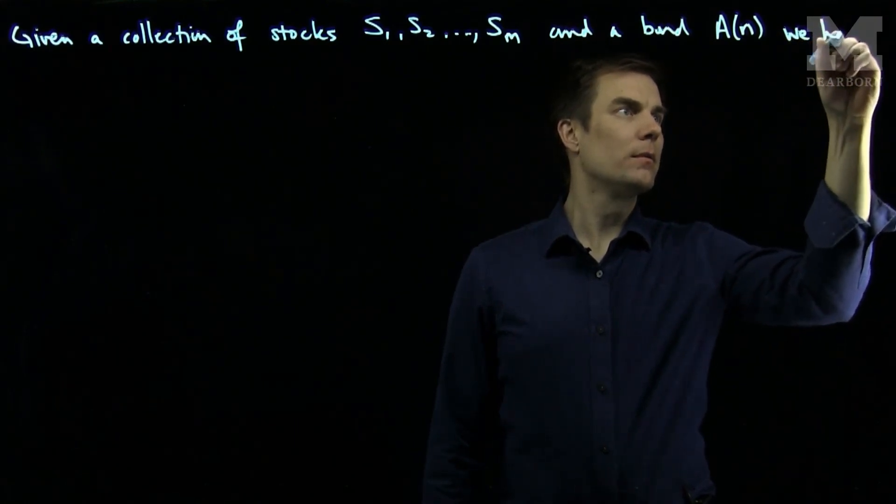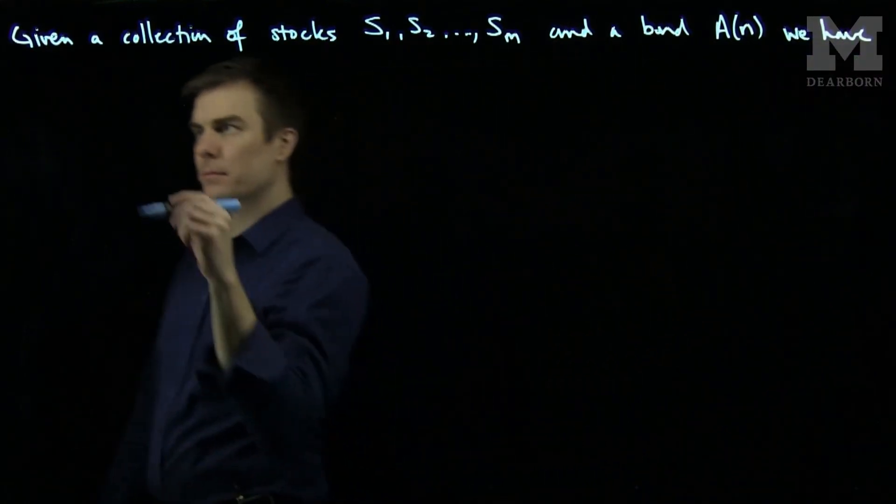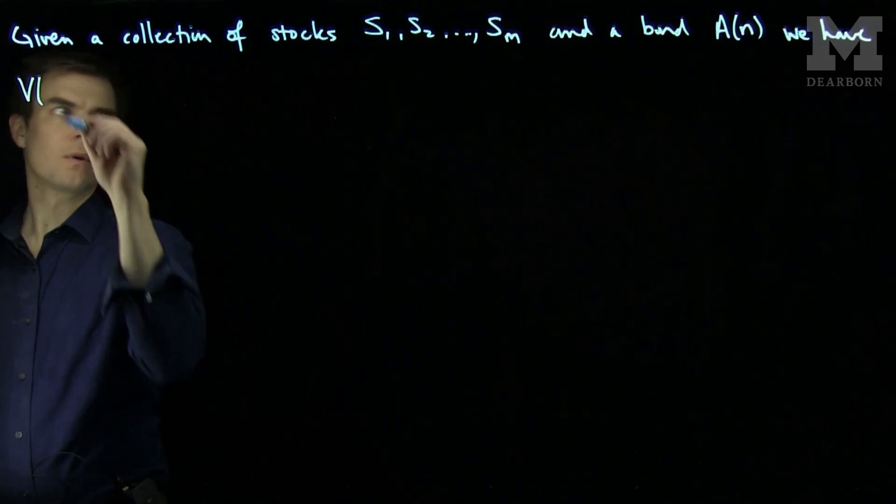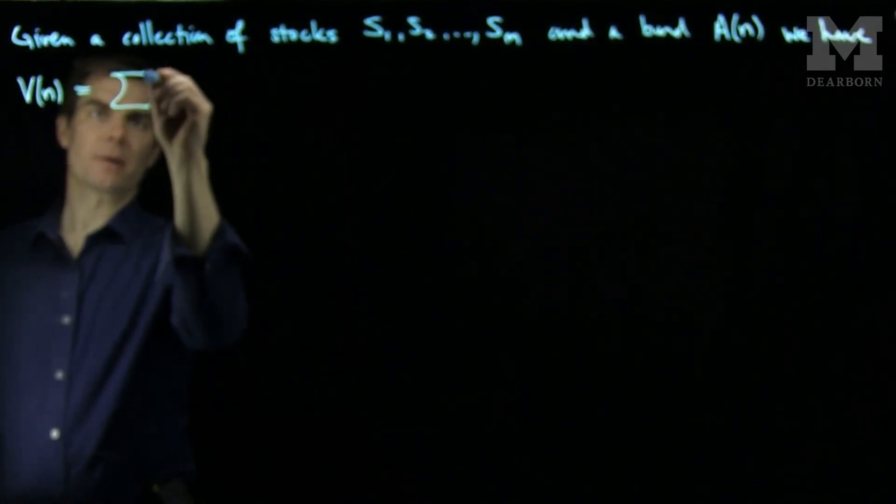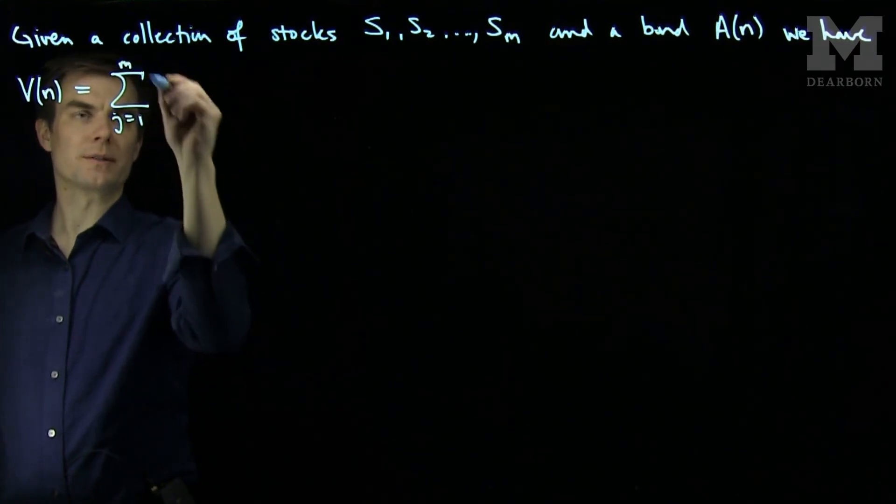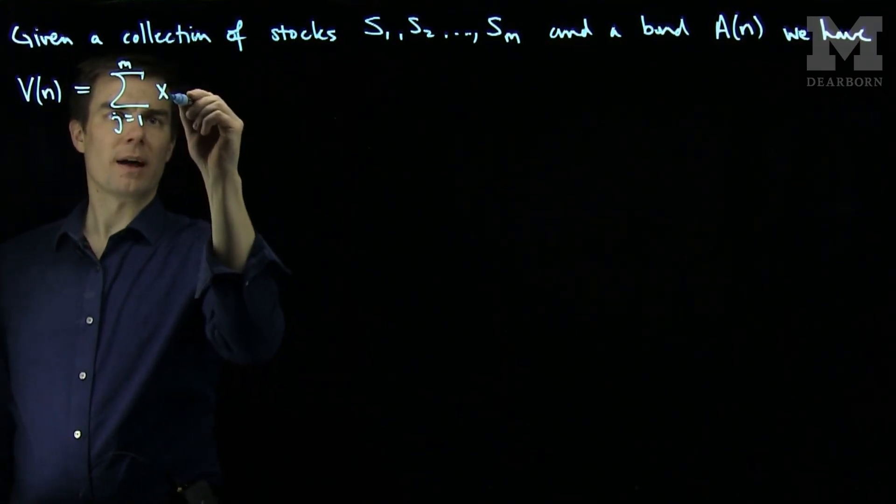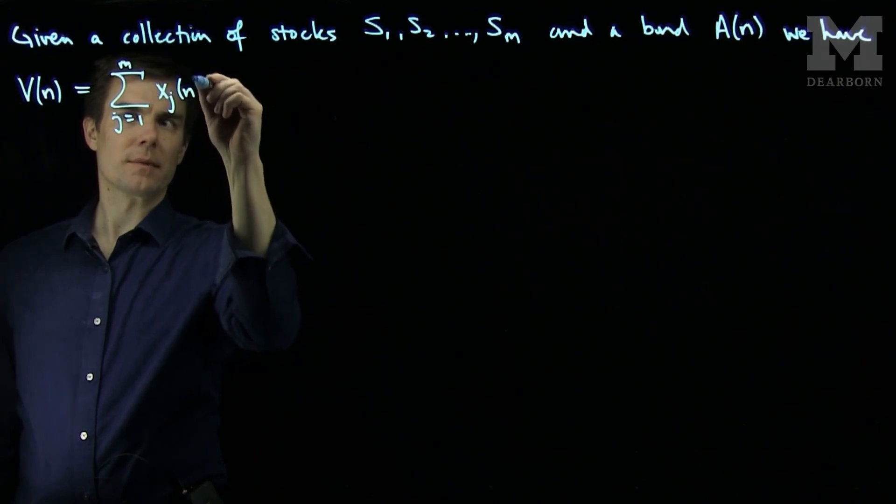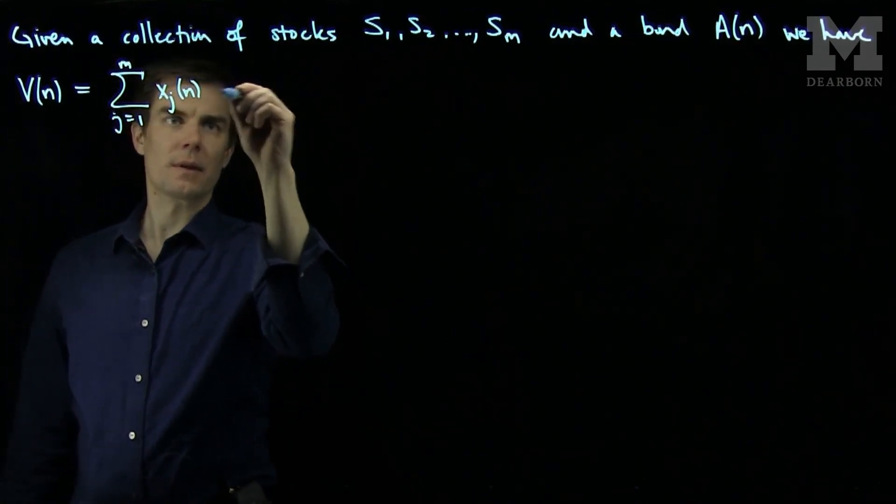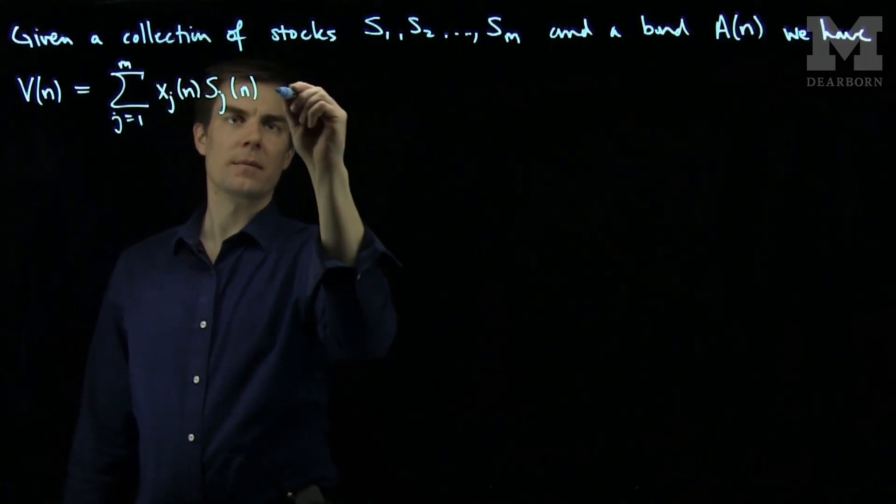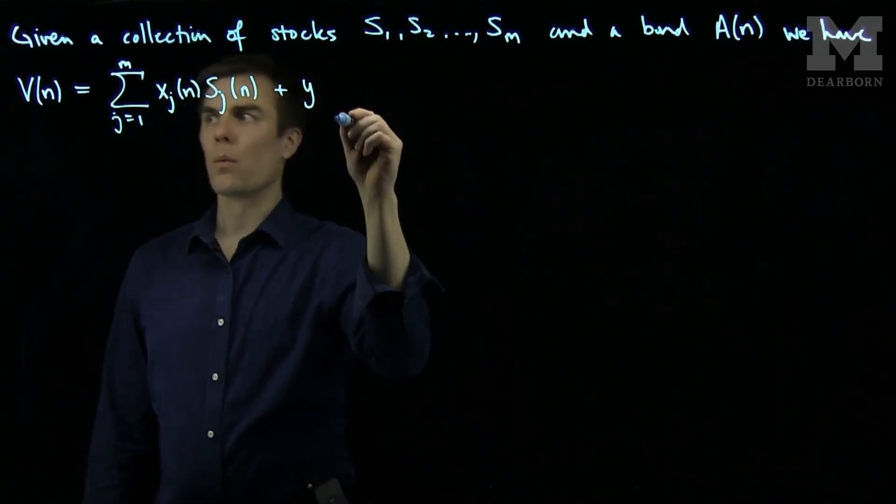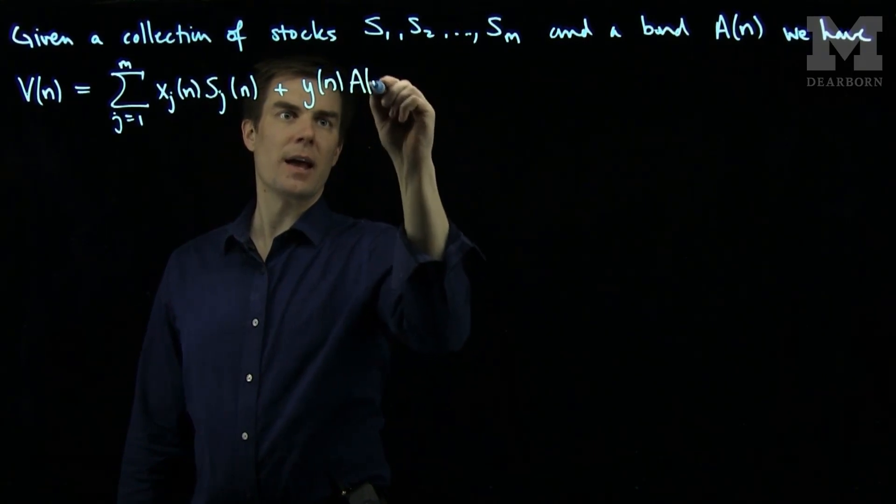we have a portfolio whose value at time n is given by the following. The sum, j goes from 1 to m, x_j(n) s_j(n) plus y(n) A(n).